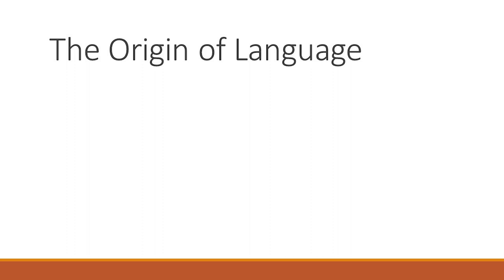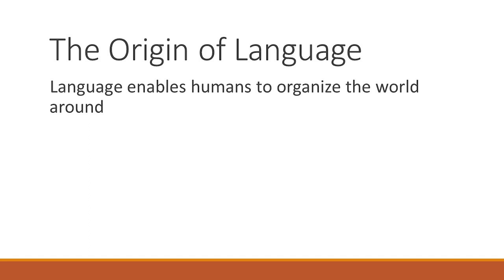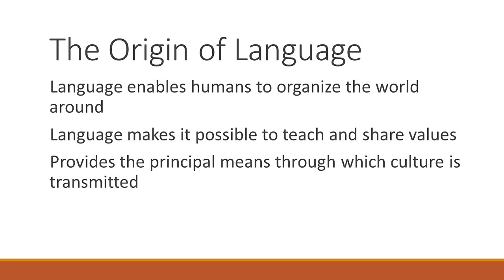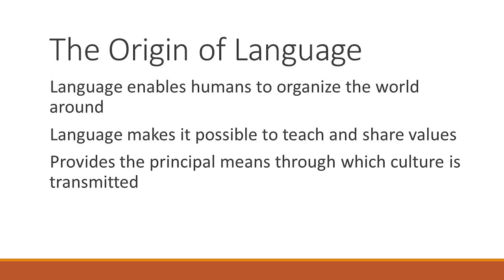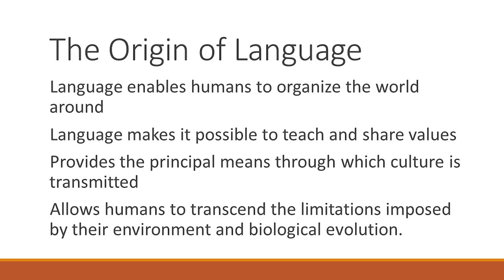What is the origin of language? Language enables human beings to organise the world around them. Language makes it possible to teach and share values. It provides the principal means through which culture is transmitted. It allows human beings to transcend the limitations imposed by their environment and biological evolution.